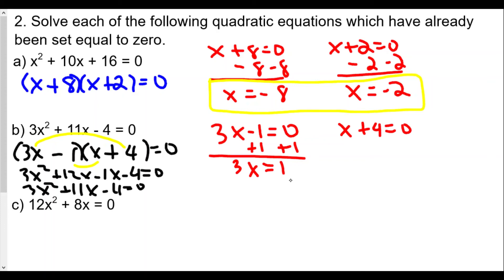So 3x equals 1, divide both sides by 3, x equals 1 third. Here, subtract both sides by 4, x is equal to negative 4. So the solution for B will be x equals positive 1 third and x equals negative 4.